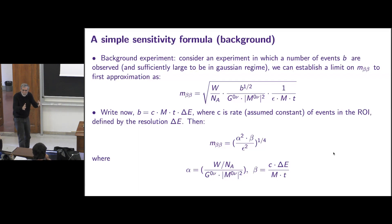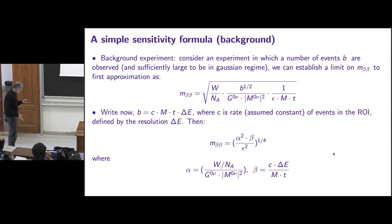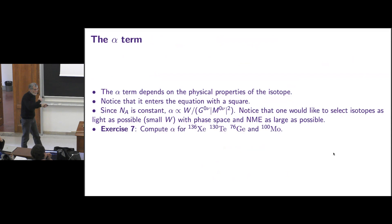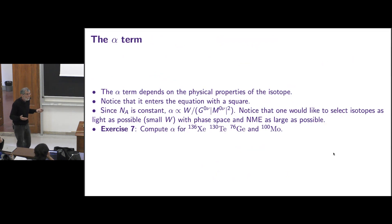The α term, as I said, is physics. Another exercise: compute the α term for the usual suspects — xenon, tellurium, germanium, and molybdenum — and tell me which numbers you get. The β term depends on the different strategies. All the germanium experiments are betting on extremely small energy resolution by default, while the total exposure may not be as large as other approaches. The background rate C — everyone tries to keep it small, and germanium experiments have proven they can keep it very small.